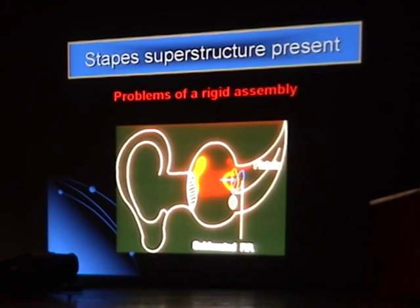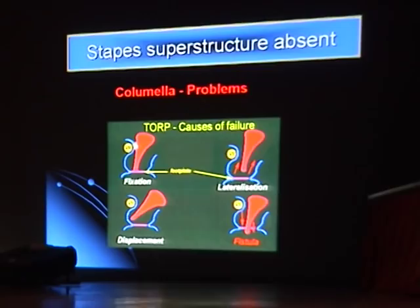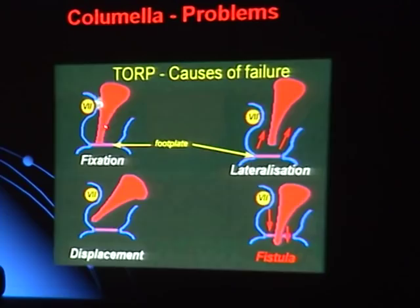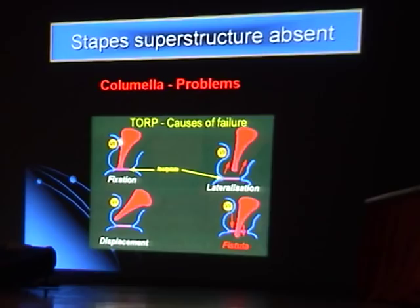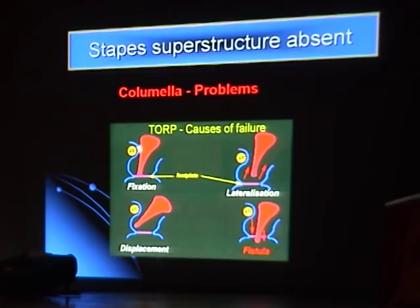No malleus-stapes assembly should be used — no rigid assembly, no torque. With an auto-malleus or auto-incus, if it touches a raw area on the fascia, adhesions result. If the torque adheres to the drum and drags outward, lateralization occurs; it can become displaced and sometimes causes a fistula.